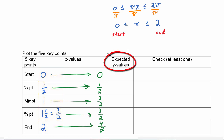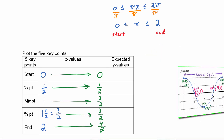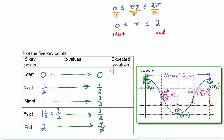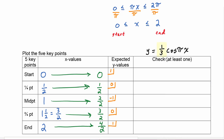Now we're ready to look at our expected y values. We're graphing y equals one third cosine of pi x, so this is a cosine graph, and we expect our y values to go one, zero, negative one, zero, and one. Since a equals one third, we multiply all y values by one third: one times one third is one third, zero times one third is zero, negative one times one third is negative one third, zero, and positive one third.